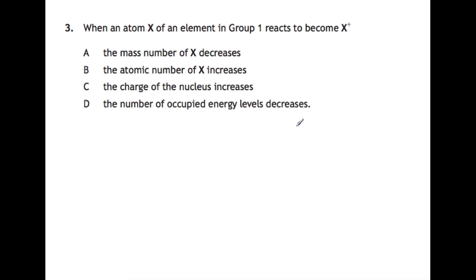Question 3. When an atom X of an element in group 1 reacts to become X+, what happens? So if we have X and we go to become X+, we must have lost an electron. Electrons have very little mass and they are on the outside of the nucleus, so there's nothing happening to the nucleus of your atom, so both A and B can be removed and the charge of your nucleus is staying the same. However, the number of occupied energy levels will decrease because you're removing the one outer electron from a group 1 element, so D is your answer.